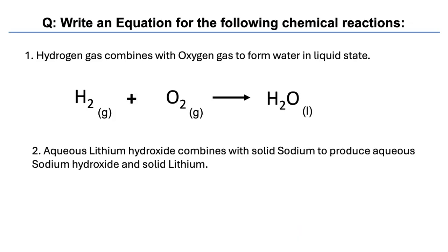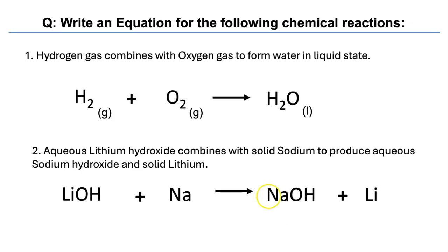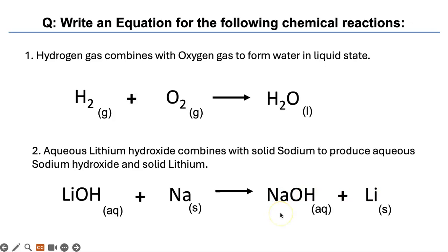Second one: aqueous lithium hydroxide combines with solid sodium to produce aqueous sodium hydroxide and solid lithium. If you can't remember what hydroxide is, look at the 4.2 ionic compounds video. Lithium hydroxide is LiOH because lithium is +1 and OH is -1. Then sodium combines to form NaOH, since Na is +1 and OH is -1, plus solid lithium. Then you add the states: aqueous for lithium hydroxide and sodium hydroxide, and solid for sodium and lithium.